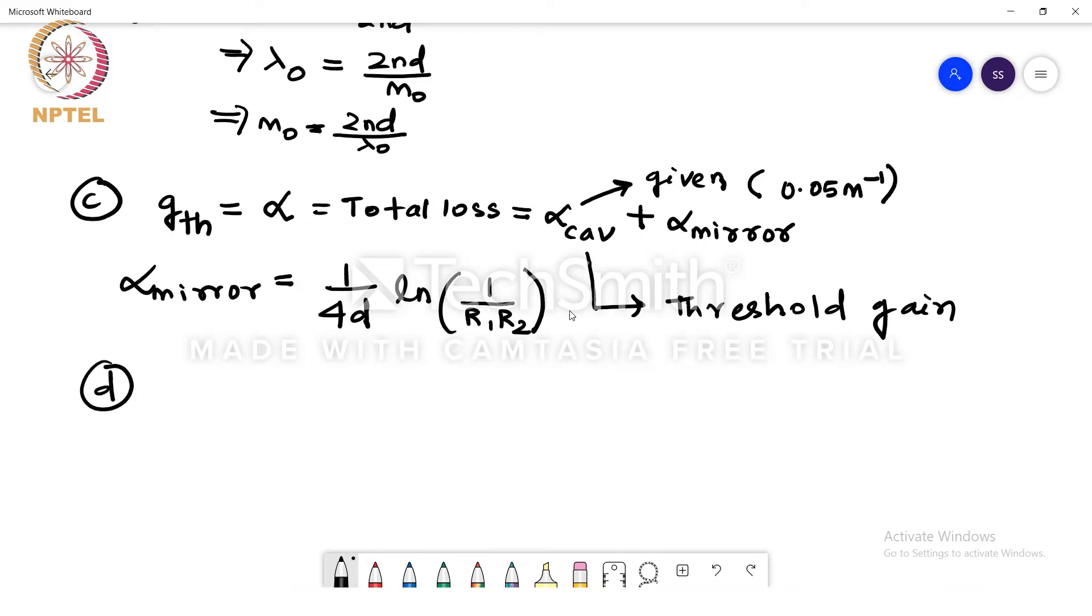Now part D, part D of the question is to find out the line width of the laser and we are given that it is an SLM, a single longitudinal mode laser. In that case the delta nu or the line width or FWHM of the laser is given by the ratio of FSR to the finesse of the cavity.